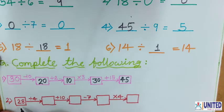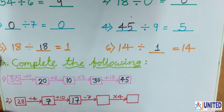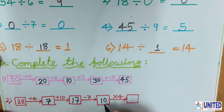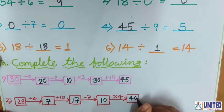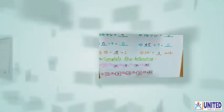Number 2: 28. First, 28 divided by 4 — 4 sevens are 28, so the quotient is 7. Then 7 plus 10 is 17. Then 17 minus 7 is 10. Then 10 multiplied by 4 — 10 fours are 40. So the answer is 40. In this way, you can solve 4 operations at a time in this activity.